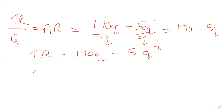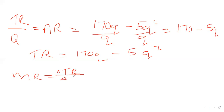When we go to average revenue, anything divided by quantity is called average. So if we divide total revenue by Q, it becomes average revenue. Total revenue is 170Q minus 5Q squared. Dividing by Q, we get 170 minus 5Q. Then marginal revenue: we differentiate total revenue; 170Q becomes 170, 5Q squared becomes 10Q.